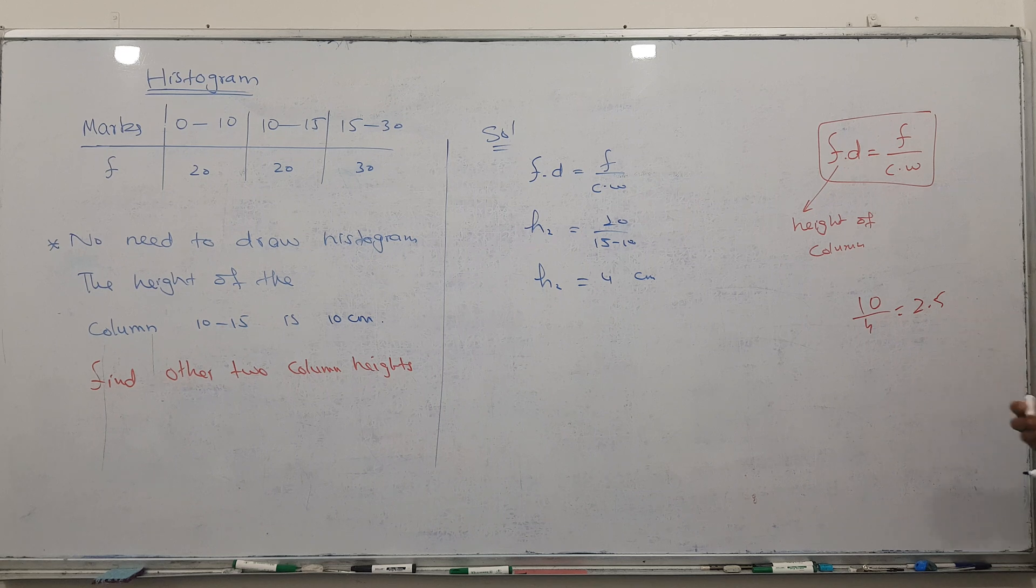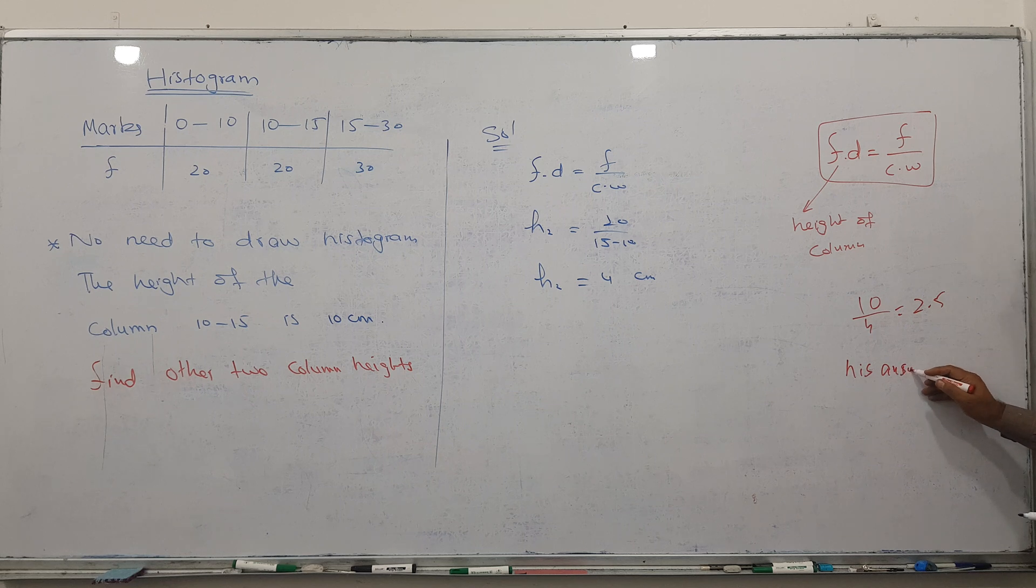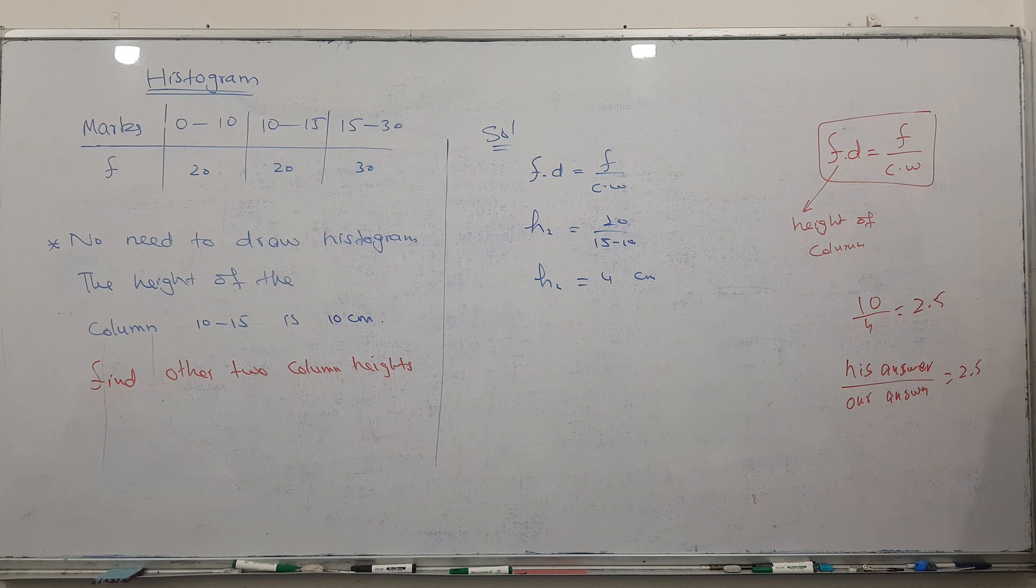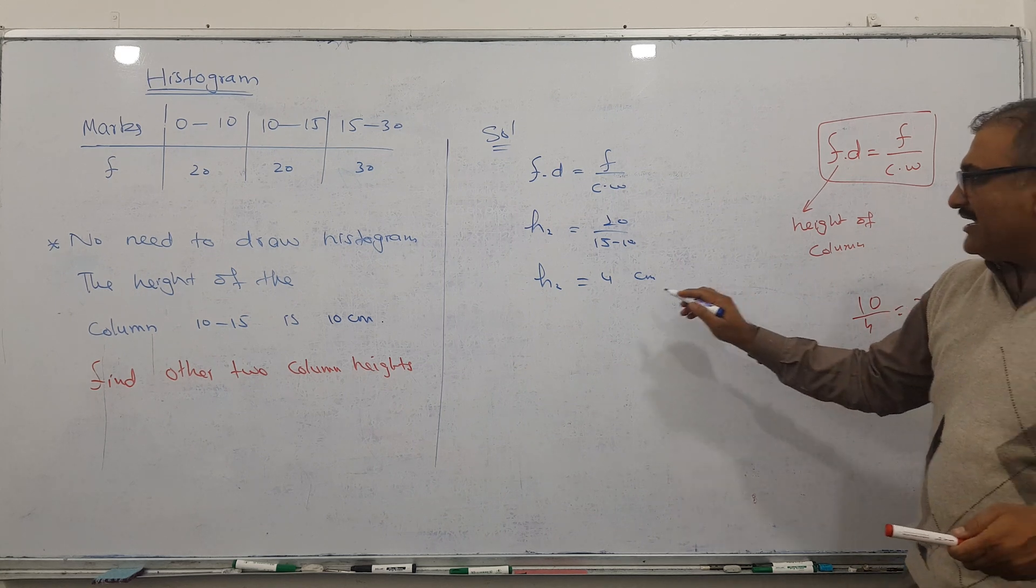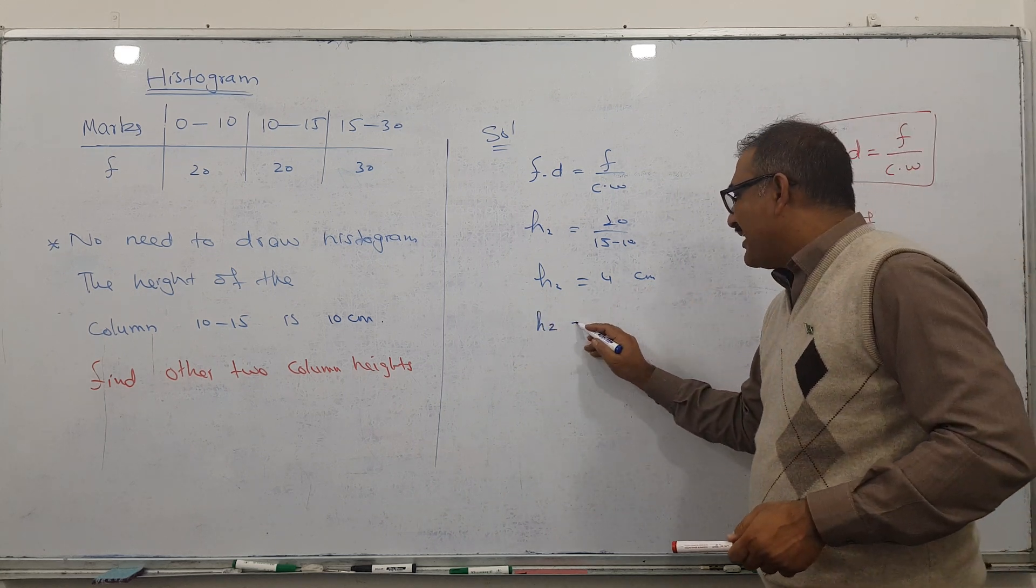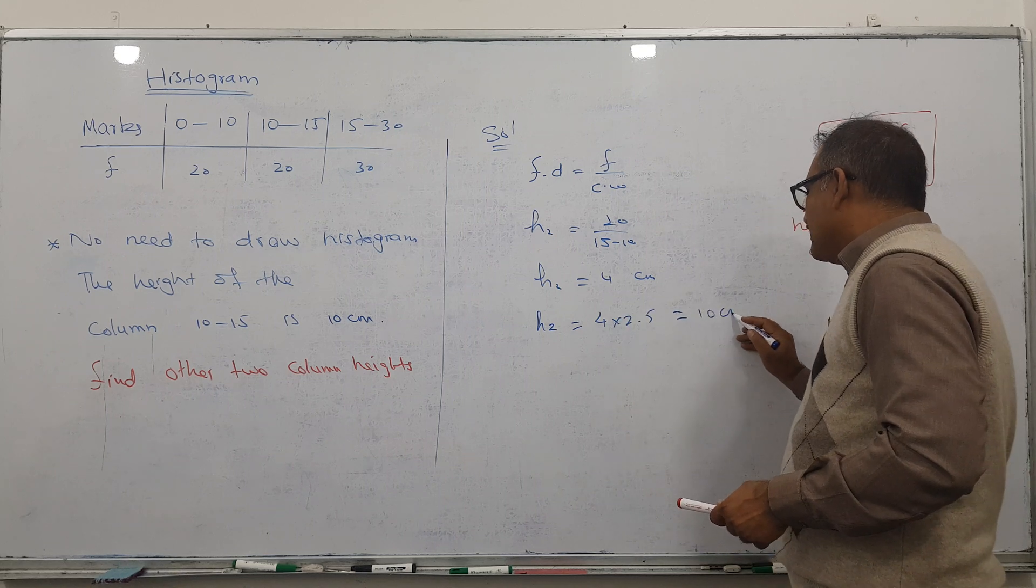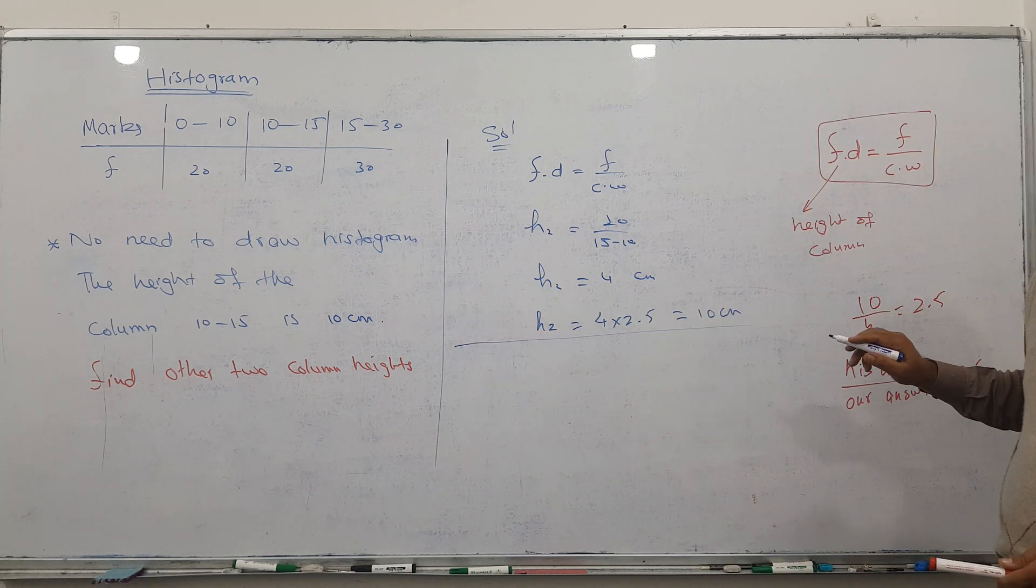Take his answer, whatever his answer is, and take our own answer. When we divide his answer by our own answer, you will get that ratio. So it means he is multiplying by 2.5, which is why he is getting 10 centimeters.